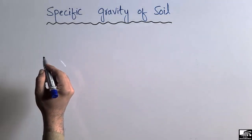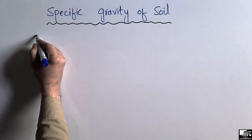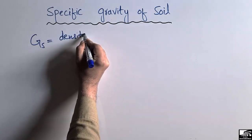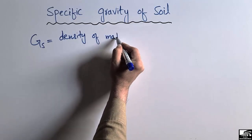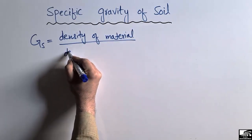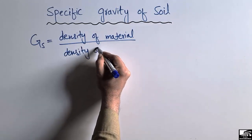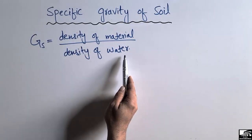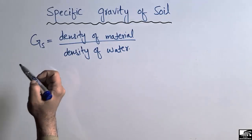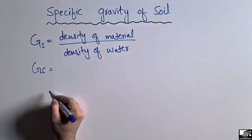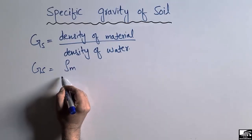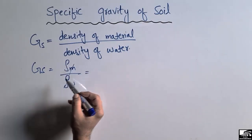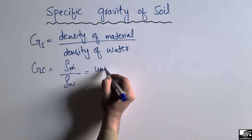The specific gravity is represented by GS. It is defined as the ratio of the density of the material to the density of water. Since we are dividing two densities — the same type of parameter — the units cancel each other out, so specific gravity is unitless.